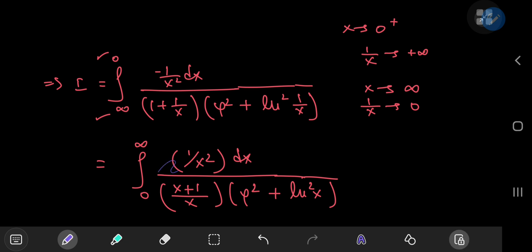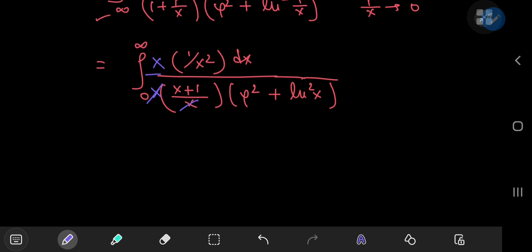Next up, we plan on multiplying upstairs and downstairs by x. And the reason for that is that you get rid of the x term downstairs in the denominator of a term in the denominator. And the resulting structure is the exact same structure as the denominator of the integrand of the original integral. So we have the integral from 0 to infinity of 1 by x dx divided by x plus 1 times phi squared plus the square of the natural log of x.